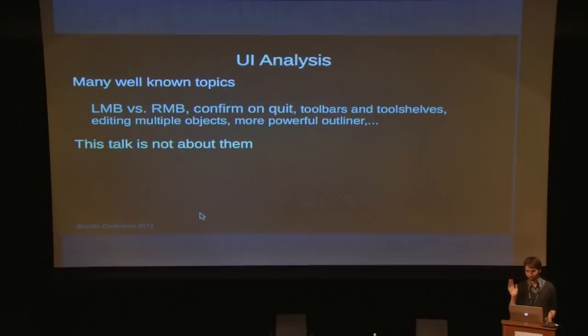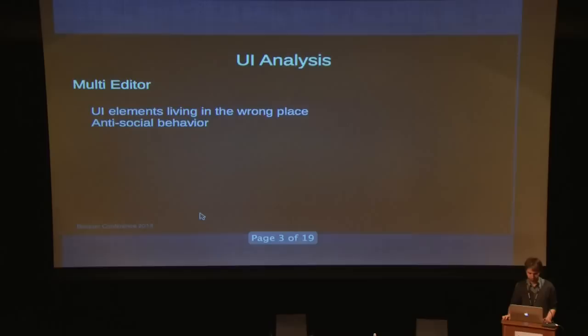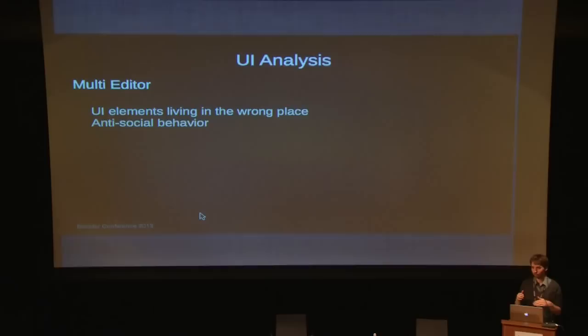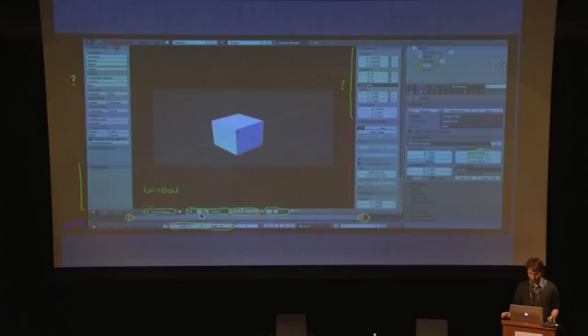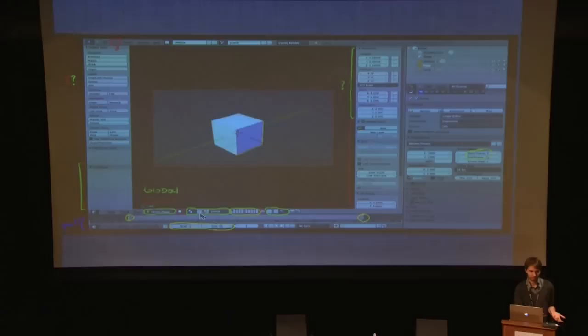There are lots of well-known topics like left mouse button versus right mouse button, but I'm not going to talk about those. One of the powerful things about the Blender user interface is that you can divide your screen into all these different editors — it's really flexible, you can combine different workflows, but it also has some issues. One of those is the redo panel. On the lower left, it has the settings of the last executed operator. This is in the 3D view, but any operator you execute goes there — so even if you do something in the UV editor or the sequencer editor, it somehow ends up in the 3D view panel, which is kind of weird.